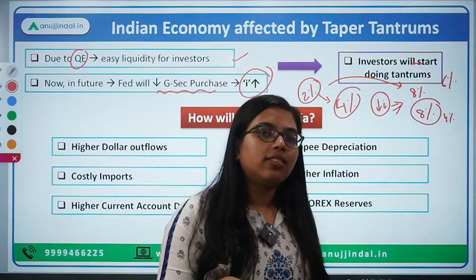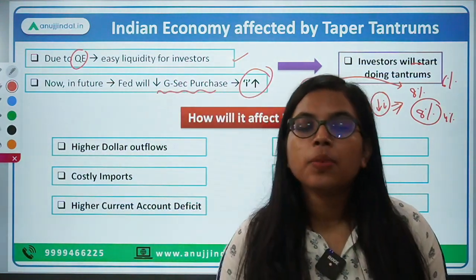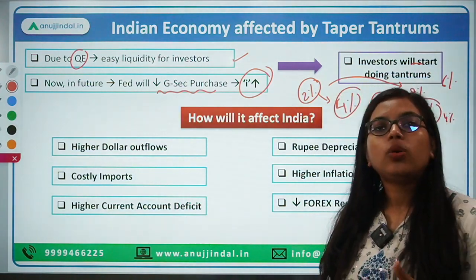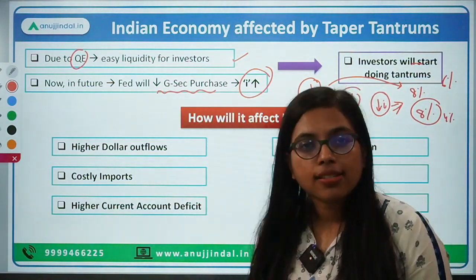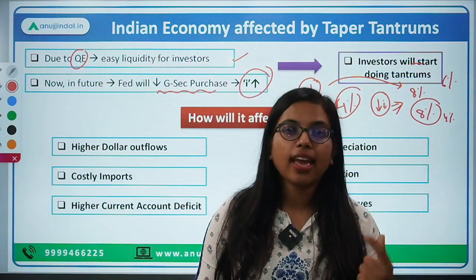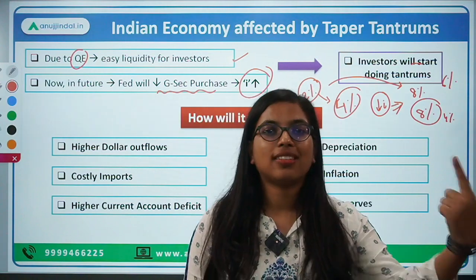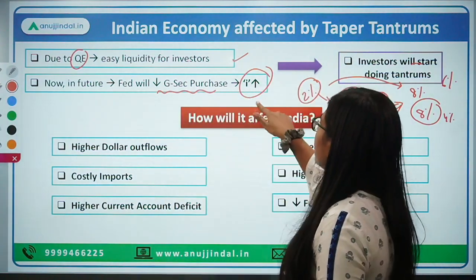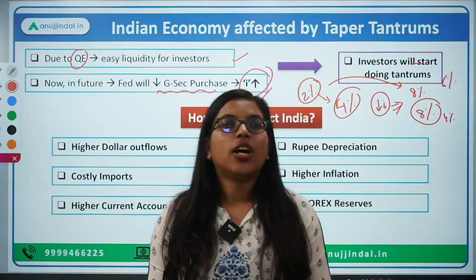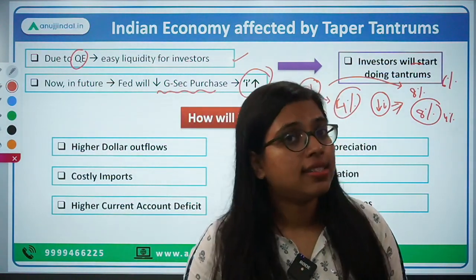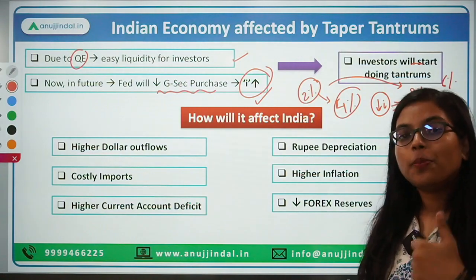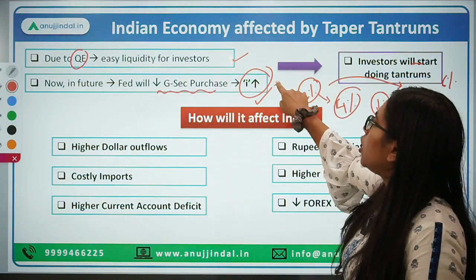Now how is this going to affect India? Since, because of the announcement of Fed tapering, US investors will start pulling out money from India. The US economy has a very strong currency — the US dollar. The reason investors go to other emerging countries is for the higher rate of interest and to earn bigger returns. But if the rate of interest increases in the US itself, why would you go to an emerging country where you face problems such as currency depreciation and instability? So people will start pulling out money from India and start investing in US bonds.